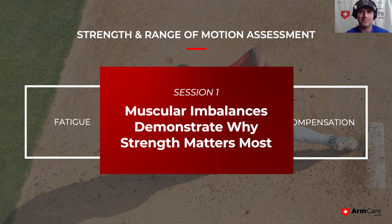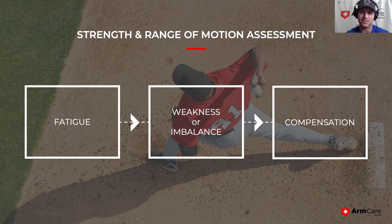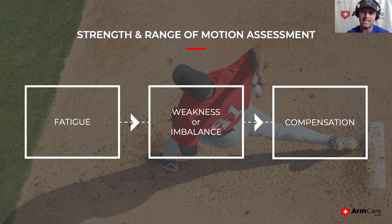That's a bold statement coming from someone who's studied human movement, especially as it relates to injury. So let's talk about why strength matters most. There are three aspects related to injury, shown on a continuum on this slide. Fatigue is the number one injury risk factor — with pitch accumulation in games and chronically over a season, weakness occurs.